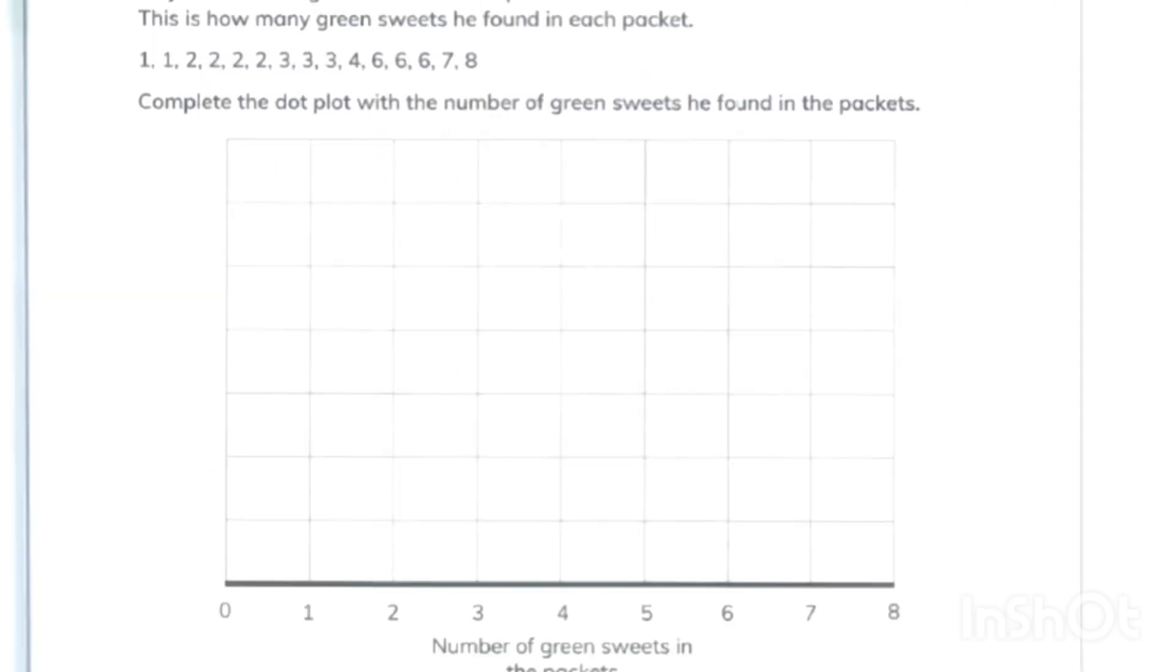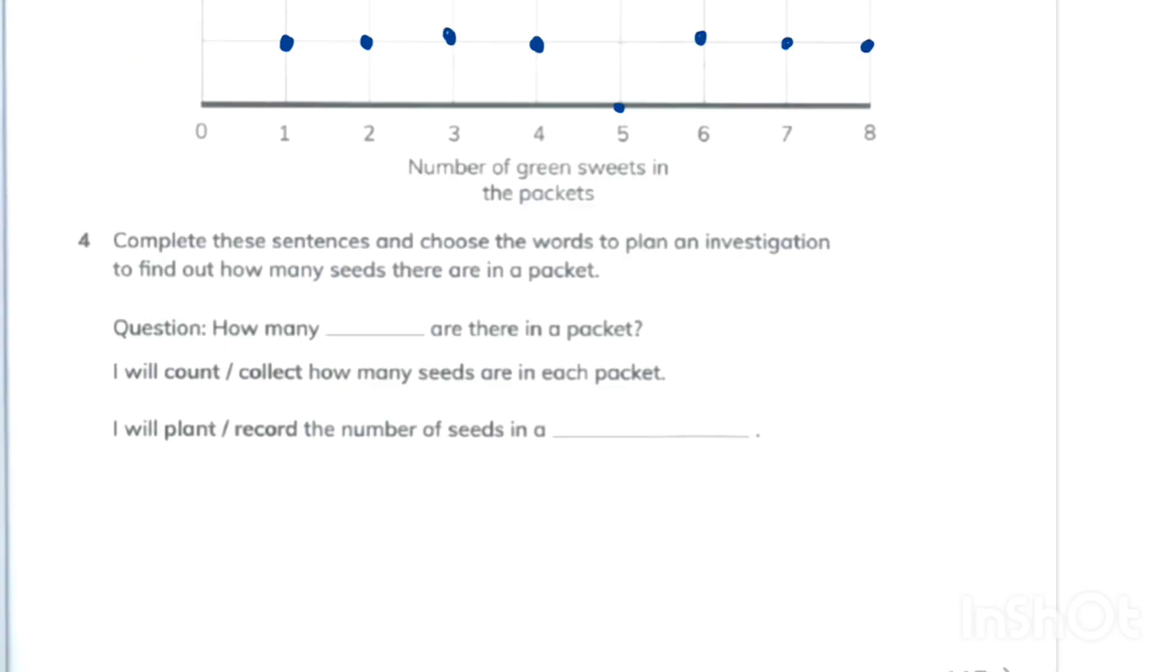In this question you have to plot the data on your graph. Here you can see that I have plotted the data and match your answers. You have to write an inquiry: how many seeds are there in a packet? And I'll count or collect, of course I will count how many seeds are in each packet, and I will plant or record, and I will record the number of seeds in a table.